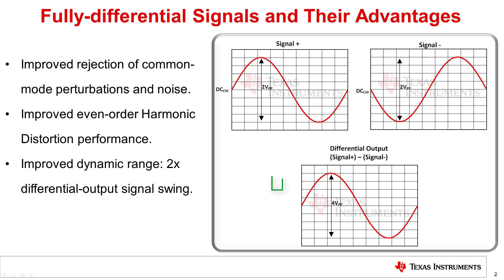Differential signaling has been commonly used in audio, data transmission, telephone systems, and high-speed data acquisition systems because of its inherent resistance to external noise sources. More recently, differential signaling is becoming increasingly popular in high-precision acquisition systems, as more SAR and Delta Sigma ADCs adopt the differential input architecture.